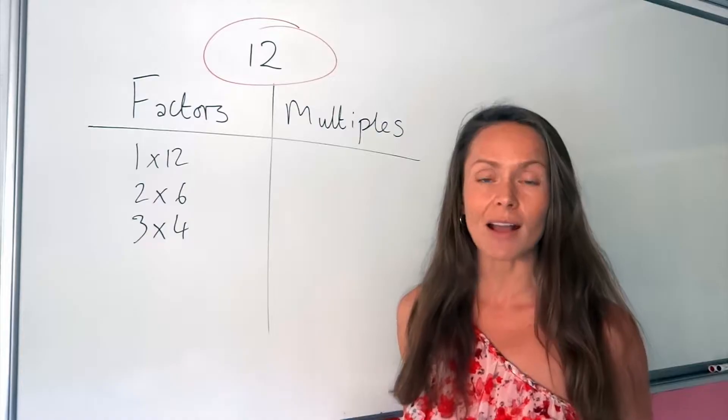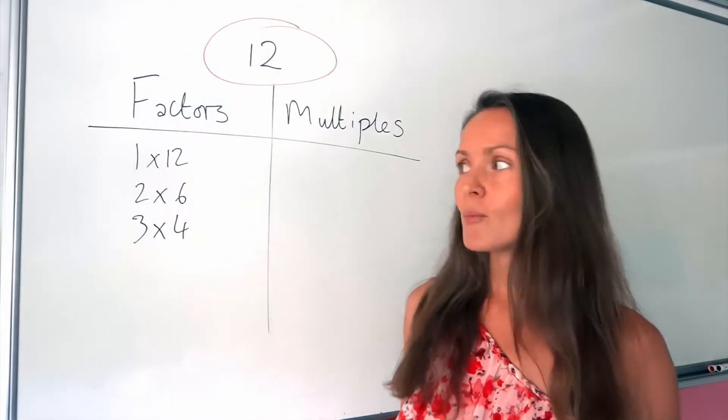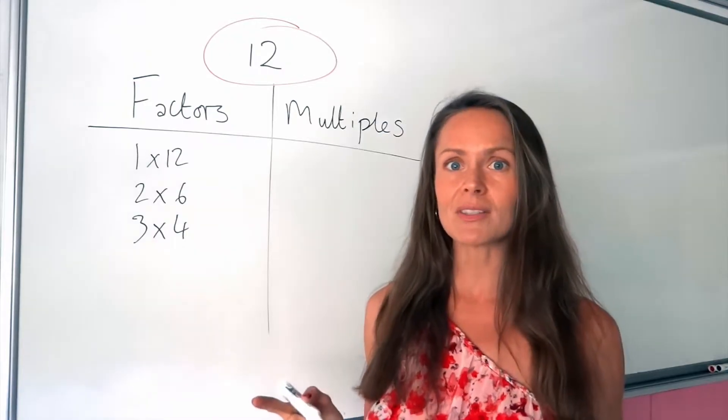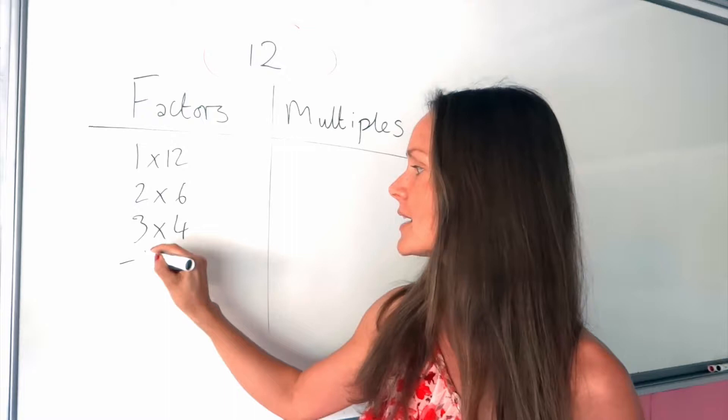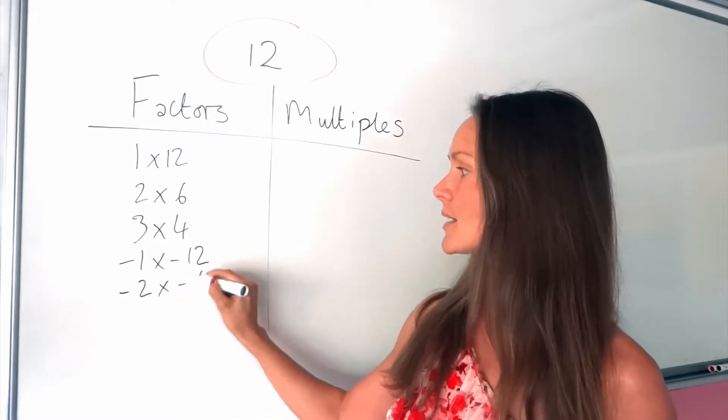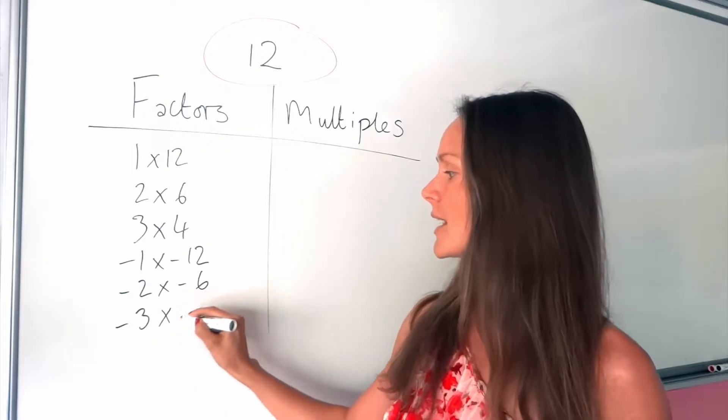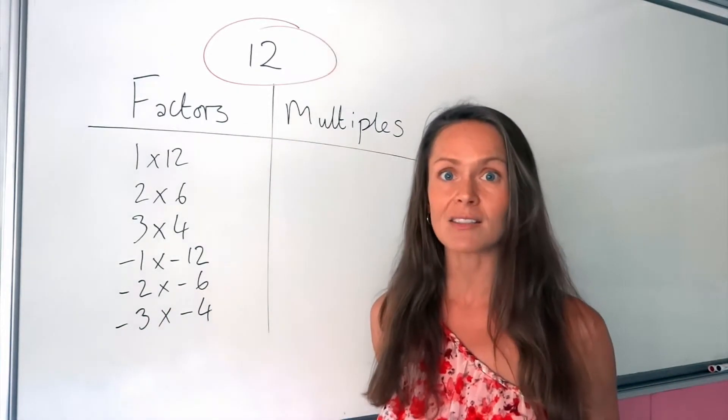So all of these numbers are factors of 12. Not forgetting the negative numbers, because if you times 2 negative numbers together you also get a positive. So you could have negative 1 times negative 12, negative 2 times negative 6 and also negative 3 times negative 4.